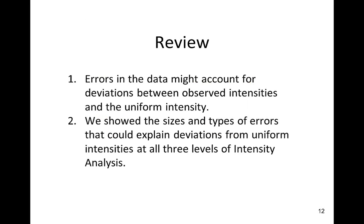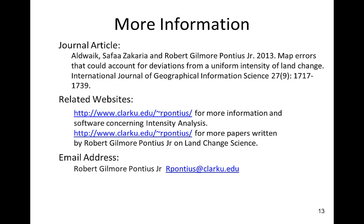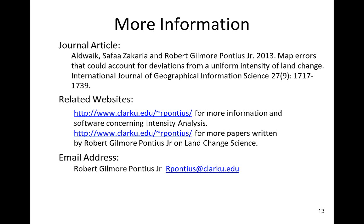From this video, we learned how errors in the data might account for deviations between observed intensities and the uniform intensity. We showed the sizes and types of errors that could explain deviations from uniform intensities at all three levels of intensity analysis. For more information, read the article by Aldwaik and Pontius. You can also go to this website for more information and software to perform the analysis with your own data, and to request more papers concerning land change science. For parts one and three of this video series, go to this website. If you have any more questions, please contact Professor Pontius.